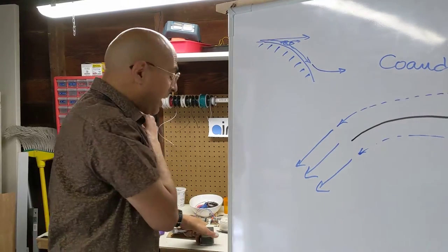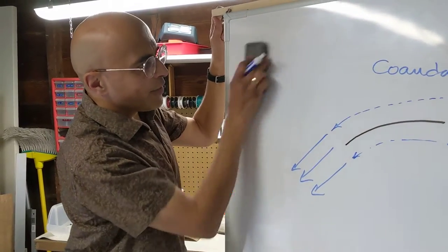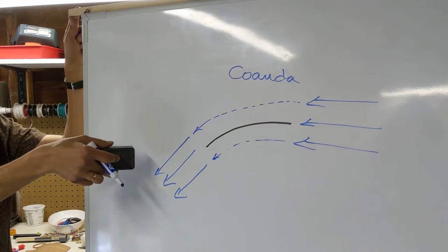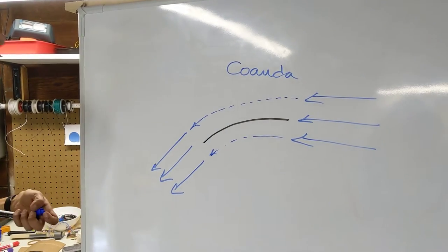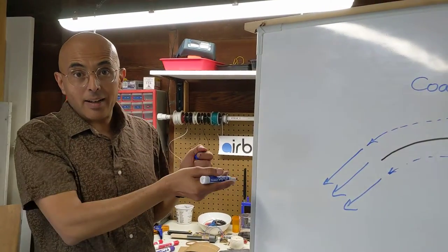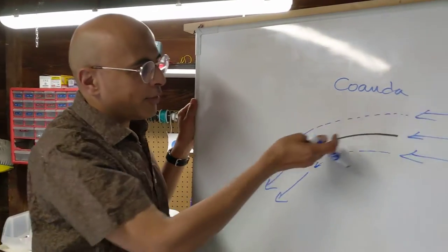Okay. And then after a certain point, it will come off the curve. Okay. So we can make use of that to curve this motion of the air. And so basically, all that you do to create a wing is a curved surface like this.